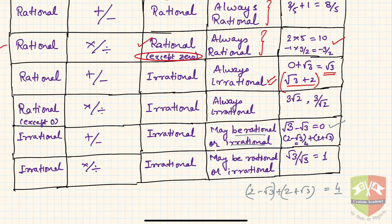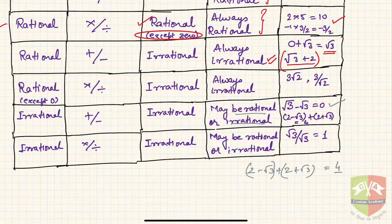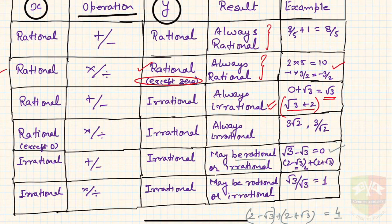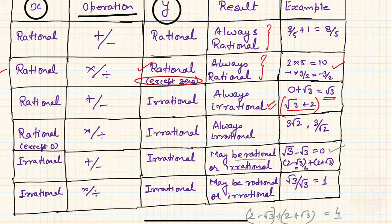Going further, irrational multiplied or divided by another irrational need not be irrational — it may be rational as well. For example, √3 ÷ 2√3 = 1/2, which is rational. So irrational multiplied or divided by irrational may lead to a rational or irrational number. Keep these results in mind; in subsequent sessions we'll see how to prove them. Thank you.